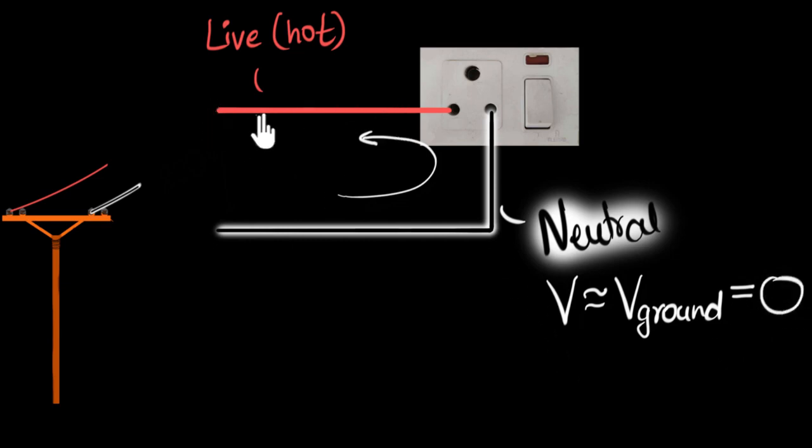And if you look at this live wire, it has a very high voltage. The voltage difference between these two wires in India is often around 220 volts.